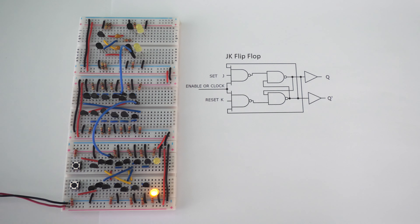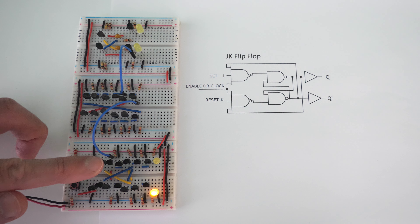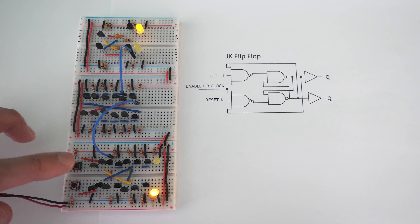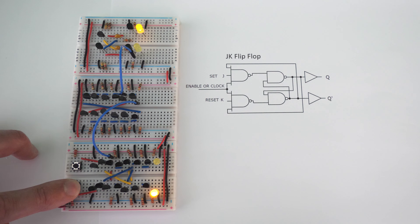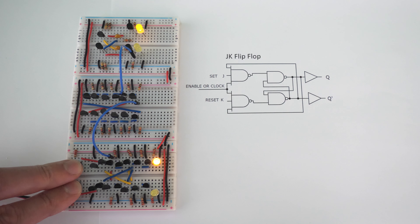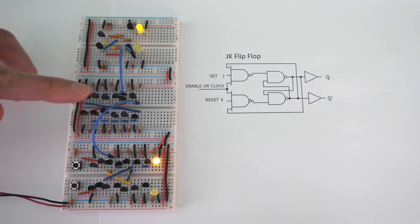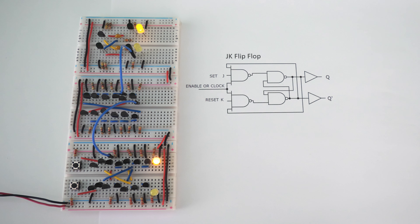In the last video, I showed you how to build this JK flip-flop and how to build a data flip-flop. Right now we have the output coming from the clock into the trigger, and then from the trigger into the clock input of this JK flip-flop. If we press set, our output will turn on, and if we press reset, our output will turn off. If we press J and K, our output will toggle back and forth. This is called an edge-triggered JK flip-flop, and what that means is that whenever this trigger goes into the clock input, it's actually a very short 500 nanosecond pulse. Today we are going to be looking at how to build a level-triggered JK flip-flop.